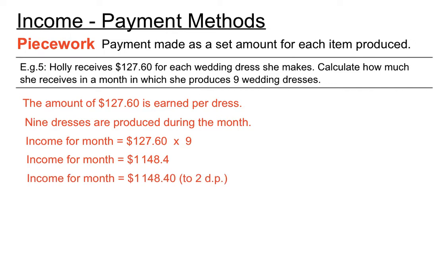It makes sense to write that as $1148.40 — $0.4 of a dollar doesn't make much sense, no pun intended. So Holly's pay for the month ends up being $1148.40: 9 times the rate for each dress, because she made 9 dresses.